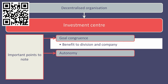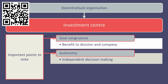Autonomy. In a decentralised organisation, the divisional manager should be able to act and make decisions independently of the company head office. Hence, the divisional manager has full control and can assume full responsibility.